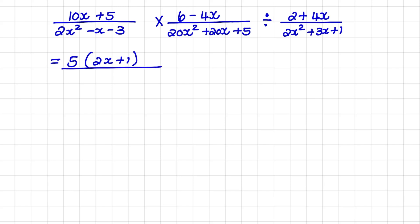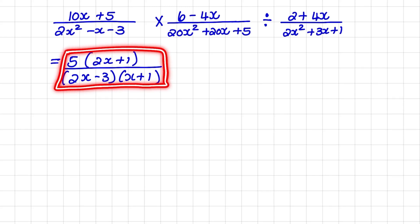In the denominator, I have 2x squared minus x minus 3. Now this is a trinomial which we can factorize. If you forgot how to factorize trinomials, please go watch our video on how to factorize. But when you factorize this trinomial, it will lead to 2x minus 3 times x plus 1. Now I have completely factorized the numerator and denominator in our first fraction.